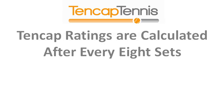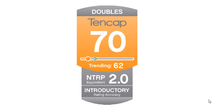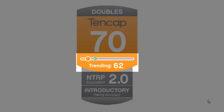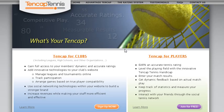10cap ratings are recalculated after every eight sets entered into the system, while rating trends will be calculated after every set played, giving players dynamic and objective feedback on their true tennis skill levels.